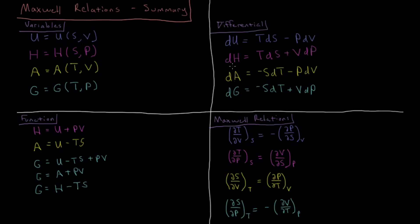We can do that for all the other thermodynamic state functions as well. From enthalpy we get dT/dP at constant S equals dV/dS at constant P. For the Helmholtz energy we get dS/dV at constant T equals dP/dT at constant V. And for the Gibbs energy, we get the Maxwell relation dS/dP at constant T equals minus dV/dT at constant P.